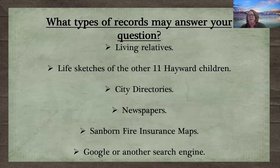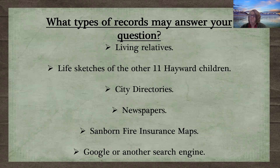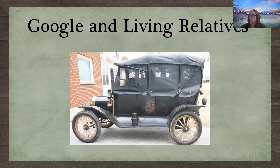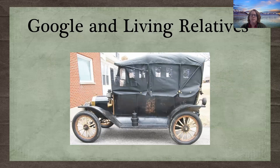So what types of records may answer my question? I can talk to living relatives, look at the life sketches of the other 11 Hayward children, consult city directories and newspapers, use the Sanborn fire insurance maps, and use Google and other search engines to answer basic questions. Google did answer the question about auto tops and side curtains. All open Ford vehicles came equipped with a top cover and side curtains, which needed to be repaired and replaced as they aged. In 1928, Ford and other automakers began introducing vehicles with fully enclosed cabs, and the need for auto tops and side curtains soon dissipated.